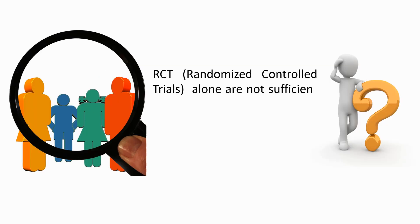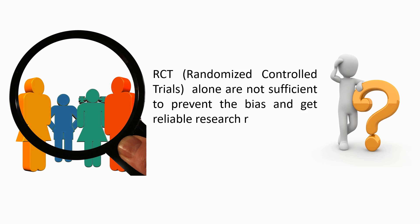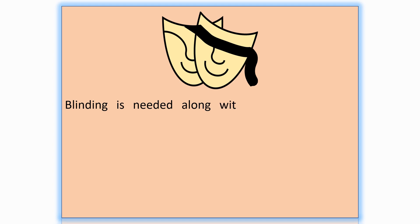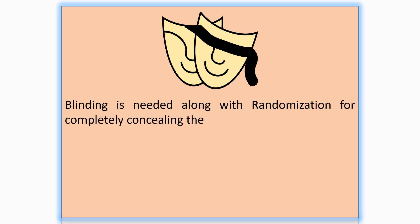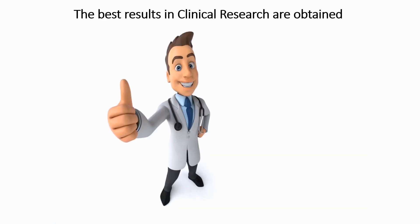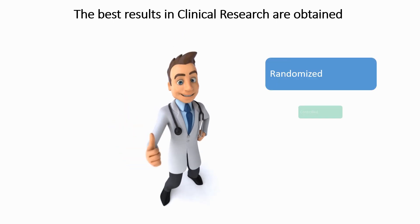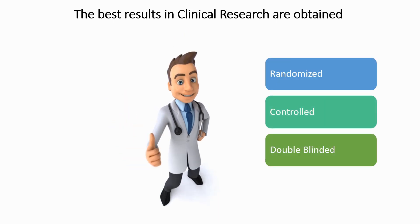Randomized controlled trials alone are not sufficient to prevent bias and get reliable research results. Blinding is needed along with randomization for completely concealing the treatment allocation. The best results in clinical research are obtained if the trial is randomized, controlled, and double-blinded.